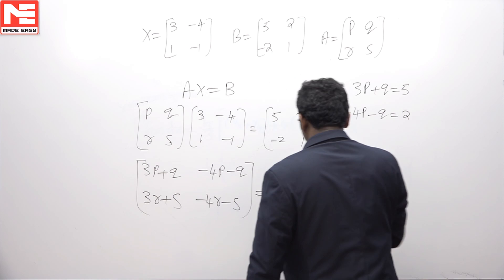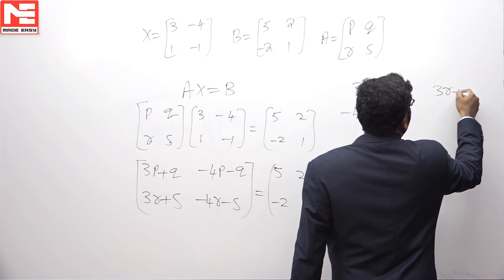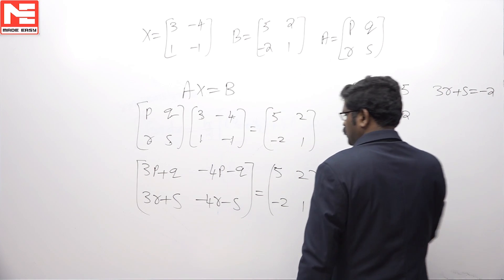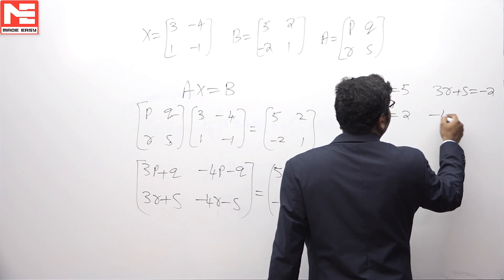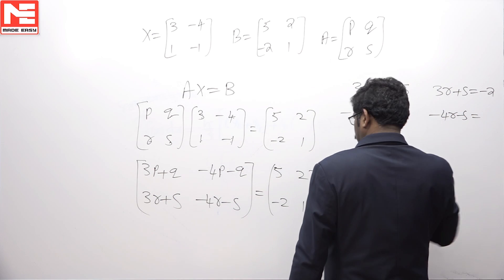3R plus S is minus 2, minus 4R minus S is 1.